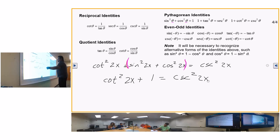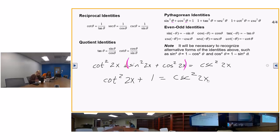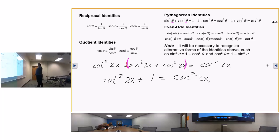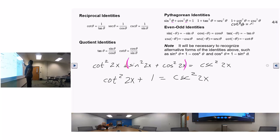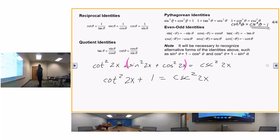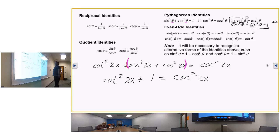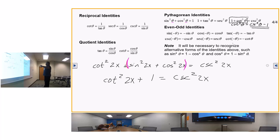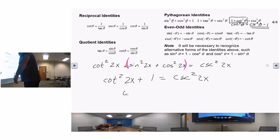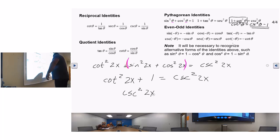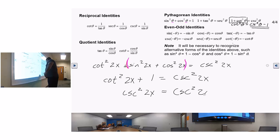So cotangent squared of 2x plus 1 is equal to the cosecant squared of 2x. Now look for this one. Where is the identity that has cotangent in it? One of the Pythagoreans. Let's go up here and solve for cotangent, or for cosecant. I can rewrite cotangent of 2x plus 1 as a cosecant. And you could write 2x. And that's equal to cosecant squared of 2x. So I proved it.